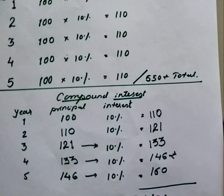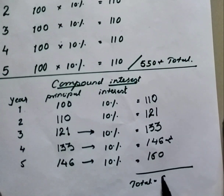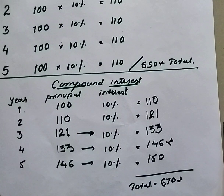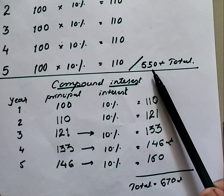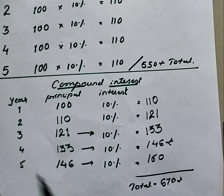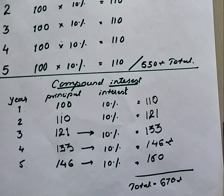So in total, when the person invests in compound interest or an FD, he will get 670 rupees. See the difference — for simple interest, that person gets 150 rupees on 100 rupees principal, whereas by compound interest on the same principal of 100 rupees, he will get 670 rupees. This is the difference between simple interest and compound interest. Thank you.